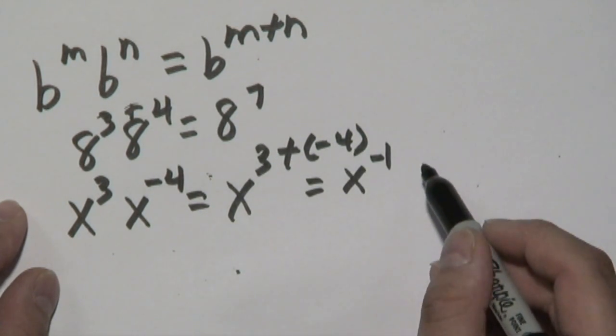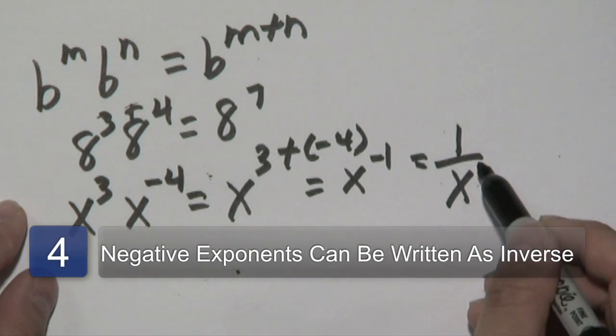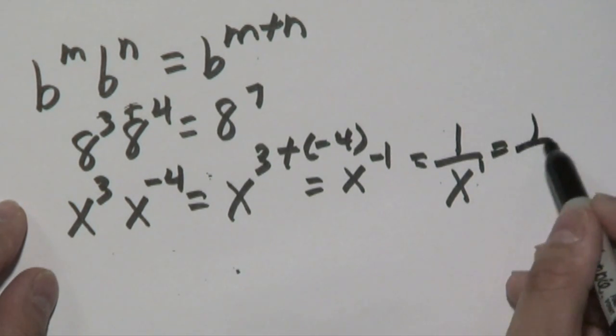And if you're familiar with the negative exponent rule, you'll know to bring it down to where it becomes 1 over x to the positive 1 or 1 over x to be short.